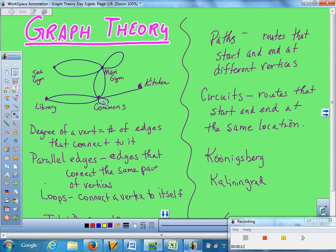When we talk about our vertices and edges, particularly the vertices, we want to find out what the degree of each vertex is. The degree of a vertex is the number of edges that connect to that vertex. For example, the kitchen only has one edge connect to it, so its degree is one.